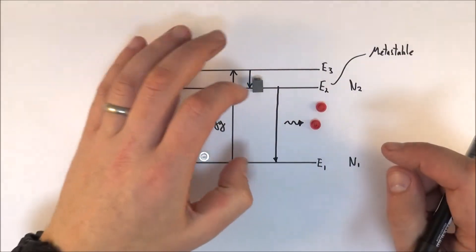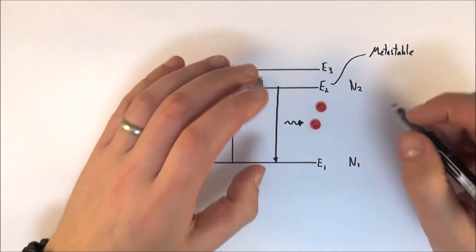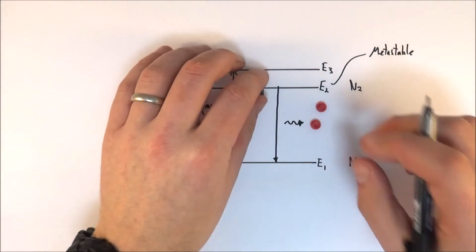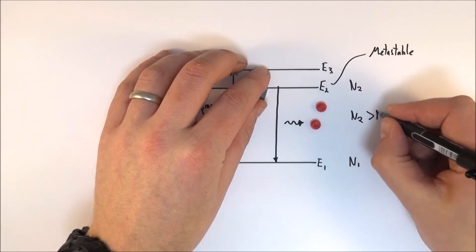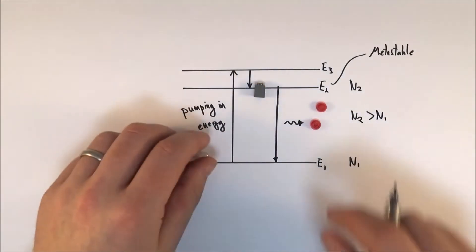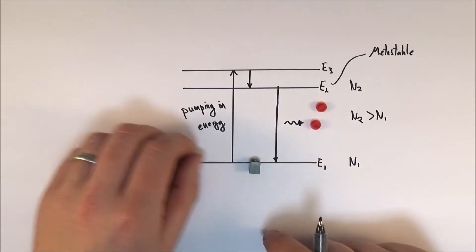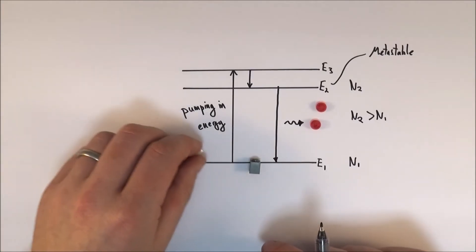What this means is that a lot of the time, the atoms are in the excited state. So what we can then get is N2 being bigger than N1. And obviously, once these atoms get down to N1, any time you have it,